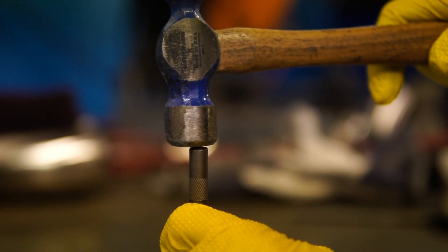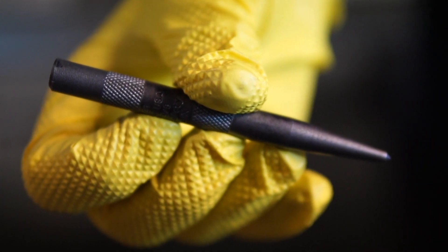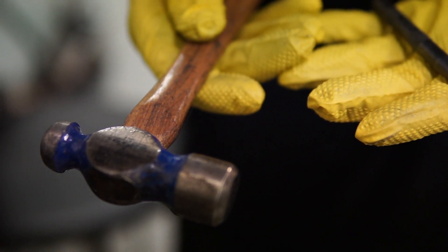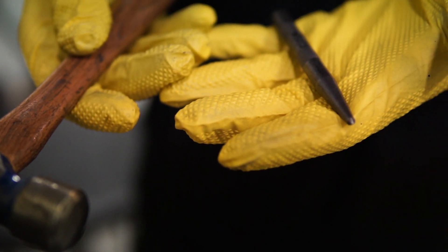I tend to only use center punches like these if I have already used a sharp automatic punch or an optical center punch. This is just to deepen the punch mark slightly so my drill won't walk when plunging into the material if I'm not using a spot drill or a center drill.